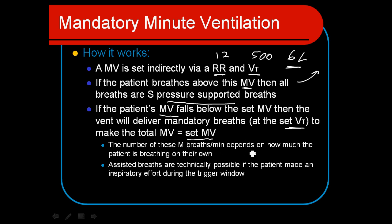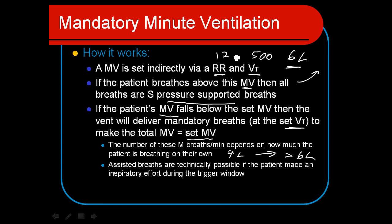The number of mandatory breaths depends on how much the patient is breathing on their own. If they're doing, say, four liters per minute on their own, the ventilator will kick in and give enough breaths to bump them over that six-liter goal. So if they go totally apneic, it would fall back to the set rate of 12 at 500 mL to deliver the full six liters.